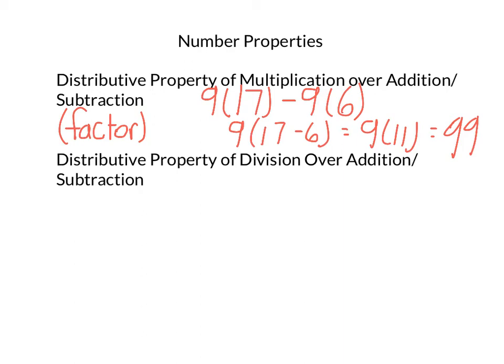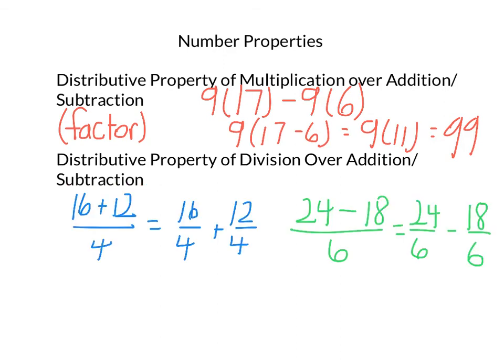Now, with the distributive property of division over addition or subtraction, we mainly see like this. So, this one would be the distributive property of division over addition because of the addition sign. And this one, of course, would be the distributive property of division over subtraction simply because of the subtraction sign.